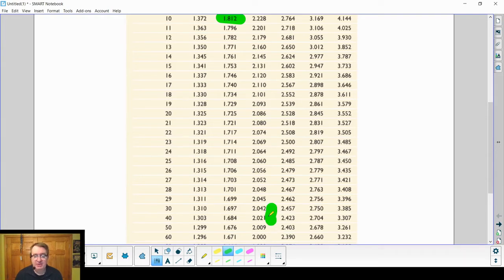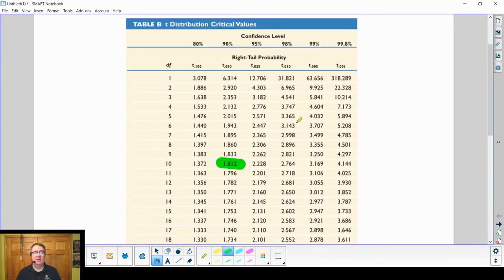What ends up happening then is that if we had 35, if we went up we'd be including some of the numbers that would not necessarily be included, so we would use this one instead. Always round down if you have a choice there.